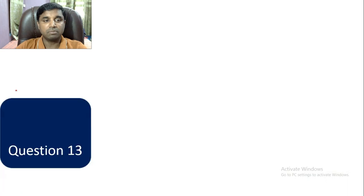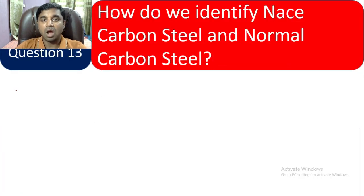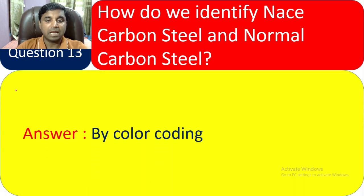Question 13/14: How do we identify NACE carbon steel and normal carbon steel? By color coding. The NACE carbon steel and normal carbon steel have different color coding, which allows us to distinguish between them.